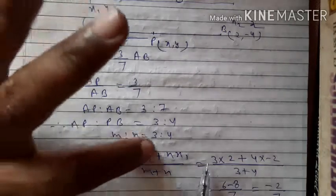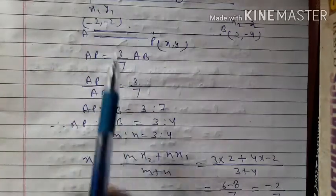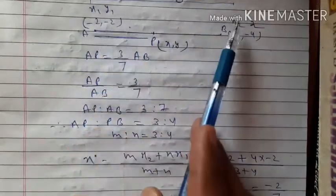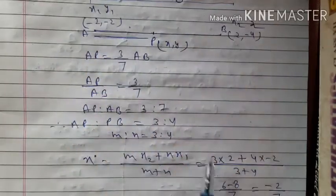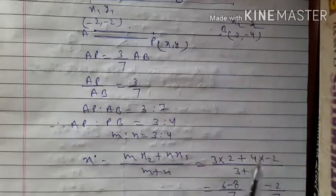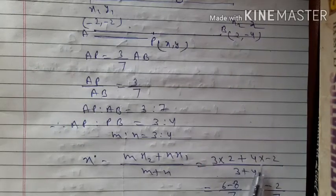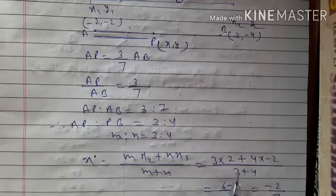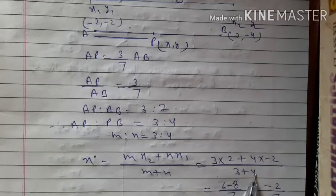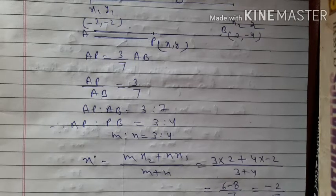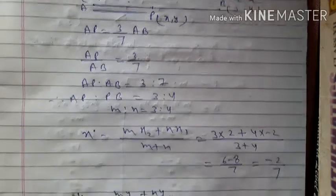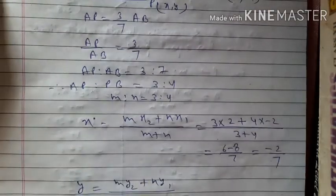M is 3 and N is 4. So x = (3×2 + 4×(-2)) / (3+4) = (6 - 8) / 7 = -2/7. So the x value is -2/7.